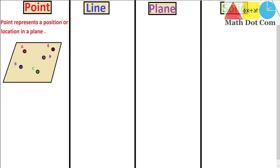A point represents a position or location in a plane. A point is basically an exact location in a space. As we have drawn here a plane with different points, points are basically represented by a dot — we have just elaborated this dot by making it a little bigger so you can have a clear understanding. Otherwise it is just a dot representing the position of something in a space, in a plane, or in a coordinate plane when you have the x or y axis.